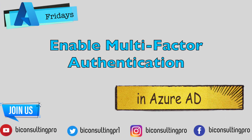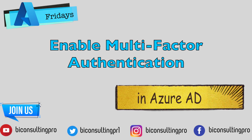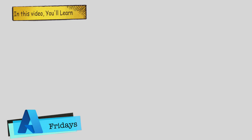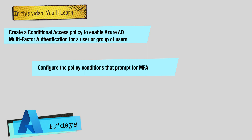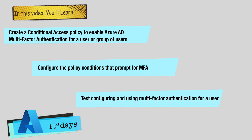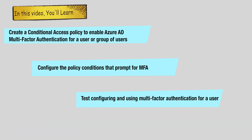Hi there, welcome to another episode of Azure Fridays. In our last video we discussed what multi-factor authentication is, and in this video you will learn how to enable multi-factor authentication. In this tutorial you are going to learn how to create a conditional access policy to enable Azure Active Directory multi-factor authentication for a group of users or a single user, configure the policy conditions that prompt for MFA, and test and use multi-factor authentication. Let's get started.